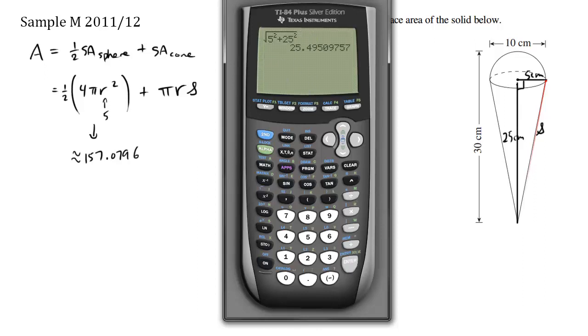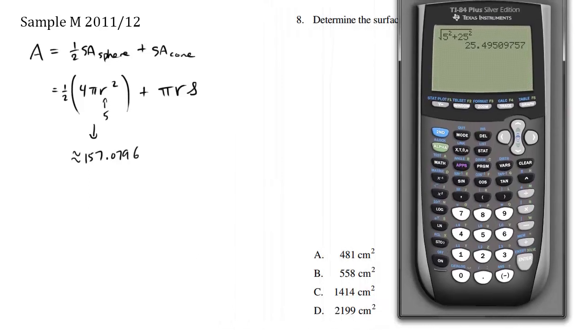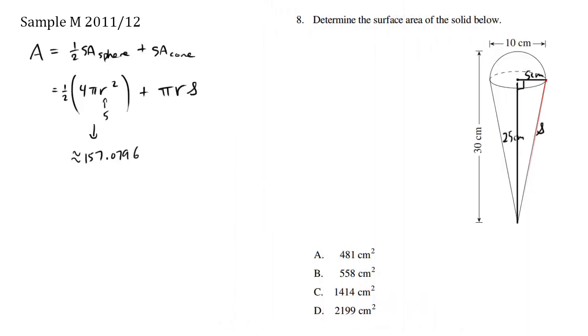So s here is approximately 25.495. Alright, so we have this equation here. We have our r value is still 5, and we have our s value as 25.495-ish. And let's work it out here.